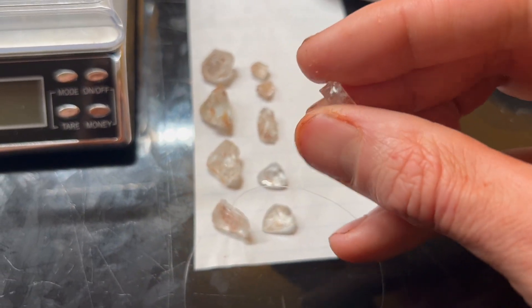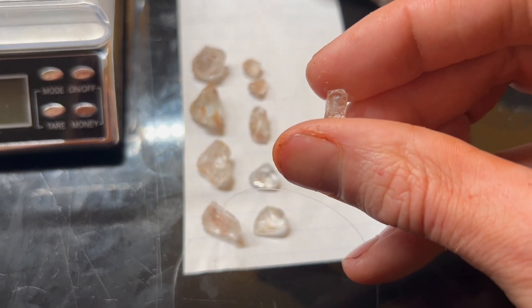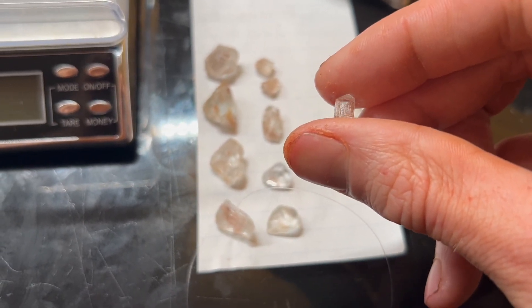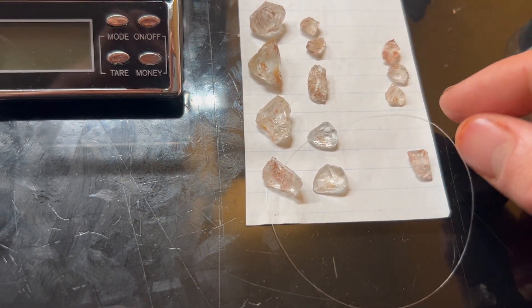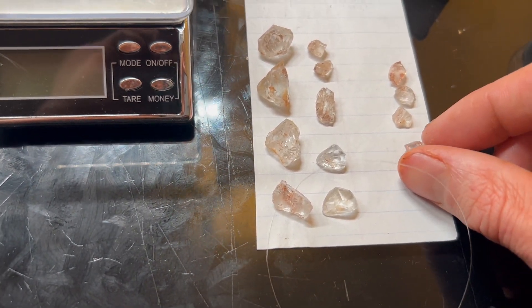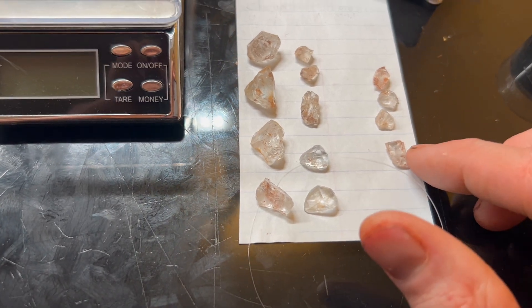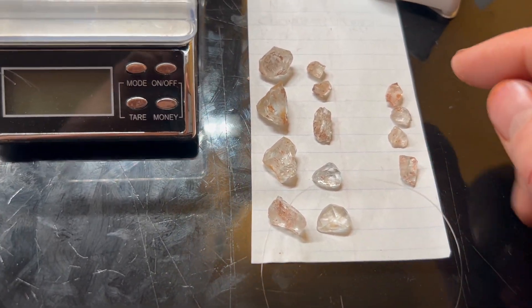Also, one good diagnostic feature is you get these striations, and these are parallel to the c-axis or longest axis, whereas in quartz, you have these Lemurian-type striations where they're perpendicular to the longest axis.